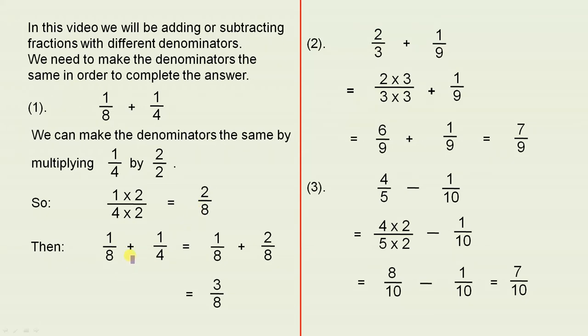So basically now we can rewrite the fraction. So 1 over 8 plus 1 over 4 is actually 1 over 8 plus 2 over 8. Now the denominators are the same. 1 plus 2 equals 3 and the answer is 3 over 8.